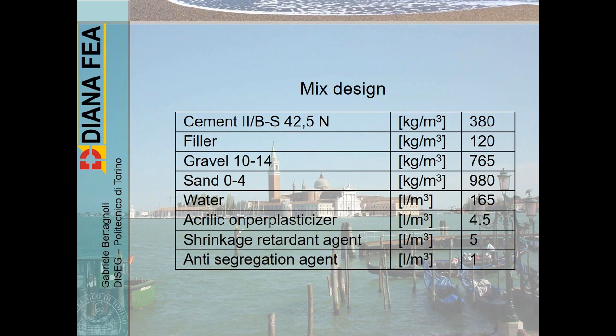An example of the mix design used — there were at least four different mix designs since each construction company had its own choices. This particular one had: 380 kilograms per cubic meter of cement, 120 kilograms per cubic meter of special very fine filler, plus gravel, sand, water, a super plasticizer (acrylic), a shrinkage retardant agent, and an anti-segregation agent to increase workability, flowability, and compaction of the material.